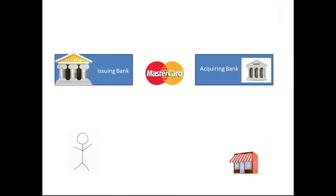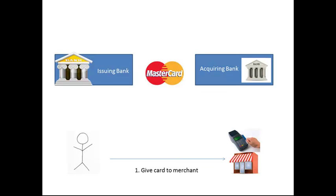Here's how it works. I give my card to the merchant when I want to buy something. The merchant swipes the card through an electronic point-of-sale device. That device sends a message to the merchant's bank — we call it the acquiring bank, it's acquired this merchant as one of its clients. The device sends the message to the acquiring bank asking: does Bill have enough money in his account? Is there a sufficient balance? Is this authorized, or has the card been stolen?